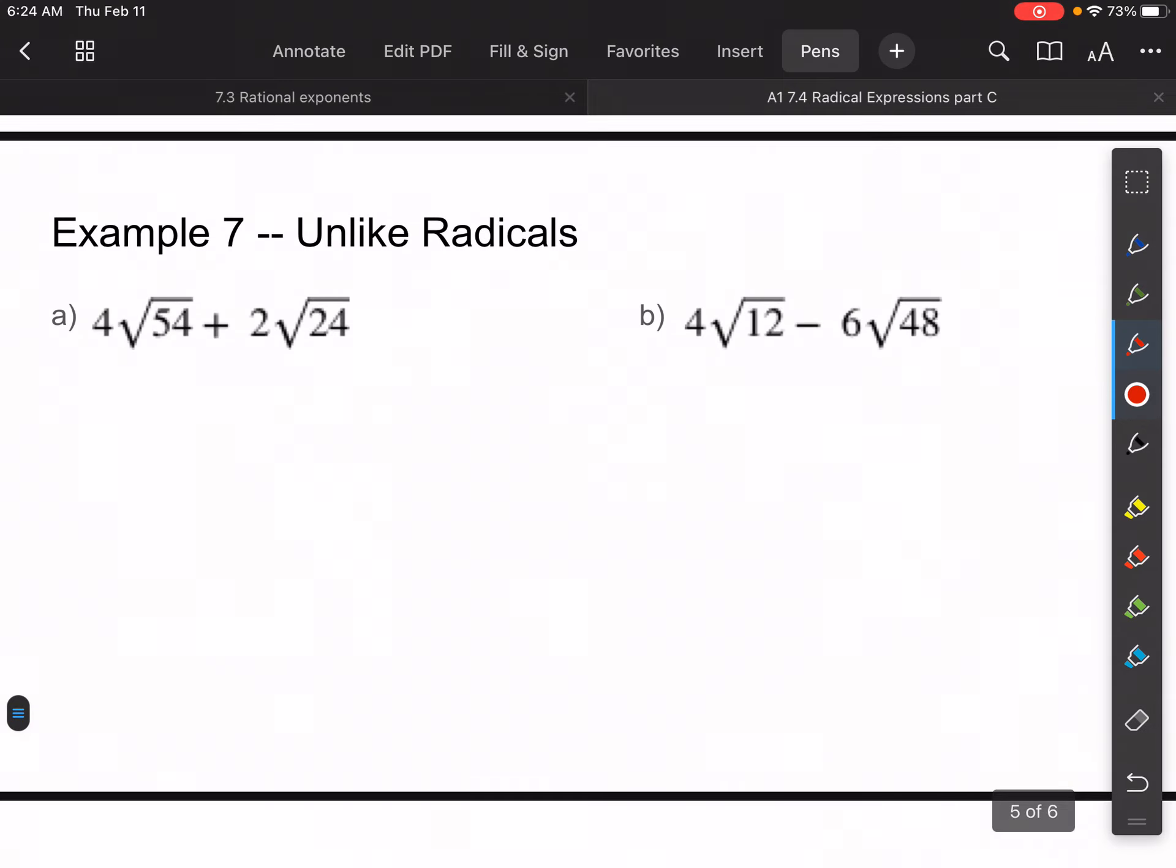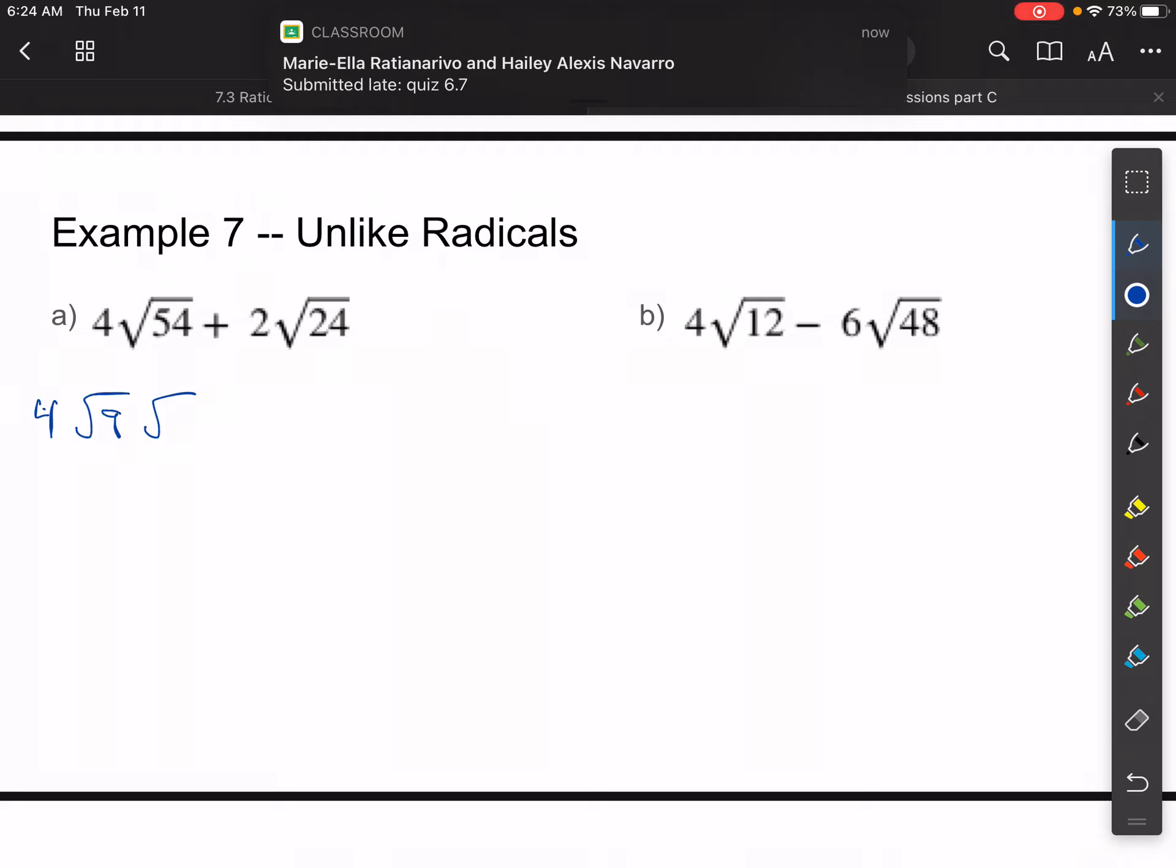All right, now what happens if I have unlike radicals? So this is where you really need to simplify first and follow those steps. Are there any perfect squares that are in 54? Well, yeah, I can rewrite 54 as the square root of 9. 9 × 6 gives me 54.